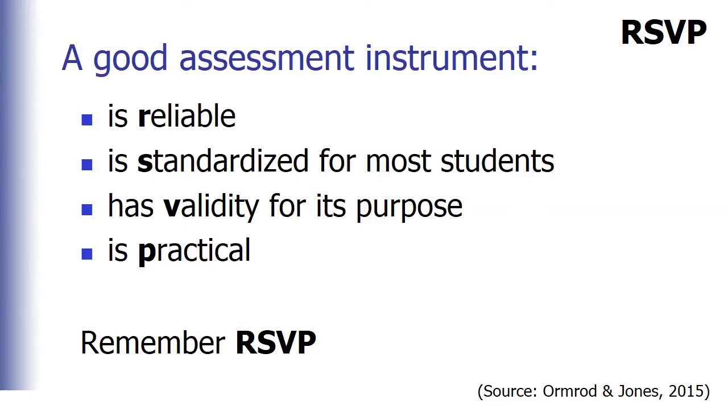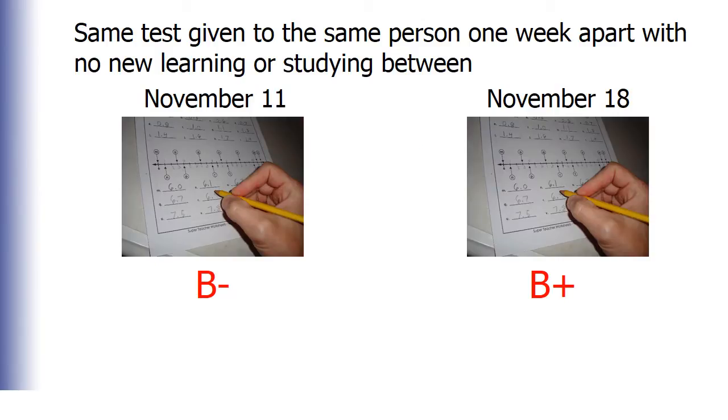Now let me give you a quiz about these concepts. In this scenario, a teacher gave the same test to the same person one week apart and the student didn't learn anything new related to the concepts tested and didn't do any more studying. On the first test, the student got a B minus, but the second time he got a B plus. What's the problem with this assessment? Pause the video if you need to think of your answer.